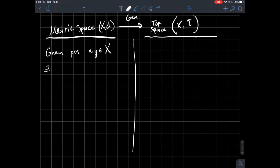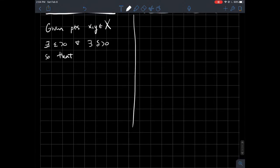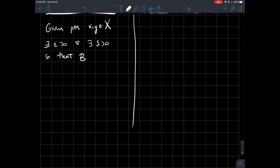...we should be able to find some real number epsilon and some other real number delta so that the ball around x of radius epsilon intersects the ball of radius delta around y is empty.